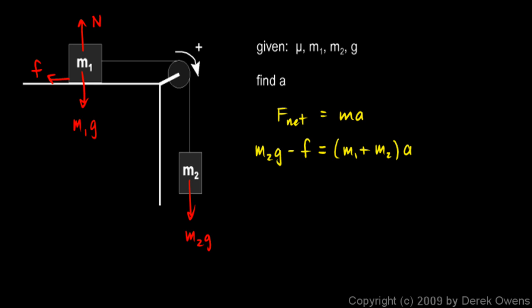Friction in this case, the force of friction, is always mu times n. And n in this problem is m1g. So friction will be mu times m1 times g.